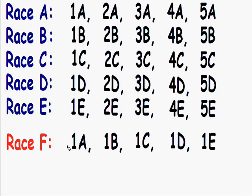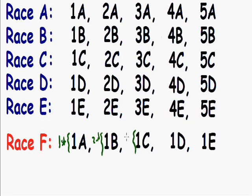Here I picked all of our first place finishers from the first 5 races to run in our 6th race. Just to make things simple — it doesn't have to be this way, but let's assume that runner 1A finishes first place in this race, runner 1B finishes second place, 1C gets third place, 1D gets fourth place, and 1E gets fifth place.